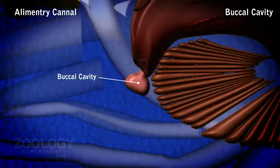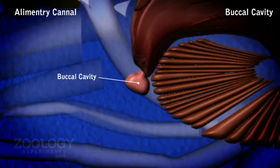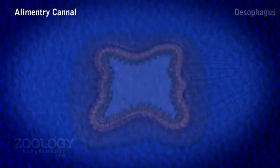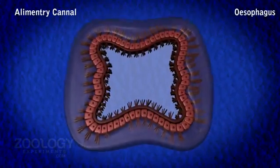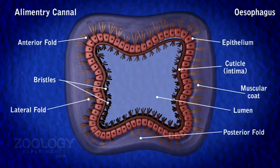The buccal cavity is anteriorly-posteriorly compressed and has a thick cuticular lining which is irregularly folded. The molar processes of mandibles lie opposite each other in the buccal cavity to crush the food between them. The short tubular esophagus runs vertically upward from the buccal cavity to the floor of the cardiac stomach.